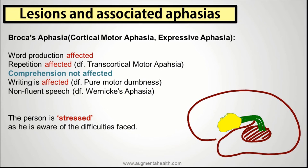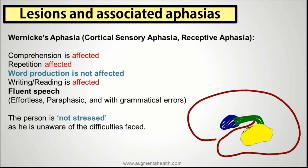The person is extremely stressed in Broca's aphasia, whereas in Wernicke's aphasia they may not be that stressed. Wernicke's aphasia is also called cortical sensory aphasia or receptive aphasia. Comprehension is very much affected, repetition is affected, but word production is typically not affected. Writing and reading are affected. These patients have fluent, effortless, paraphasic speech with grammatical errors and may use words in a jumbled manner. This might make a clinician think of a psychotic episode, so you need to be careful. The person is typically not stressed because they are unaware of the difficulties they are facing.